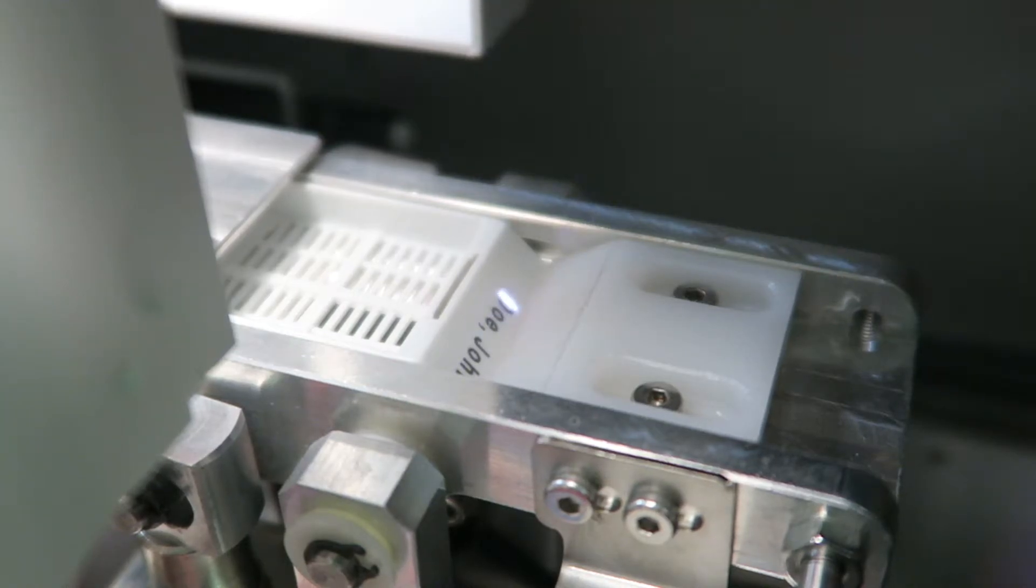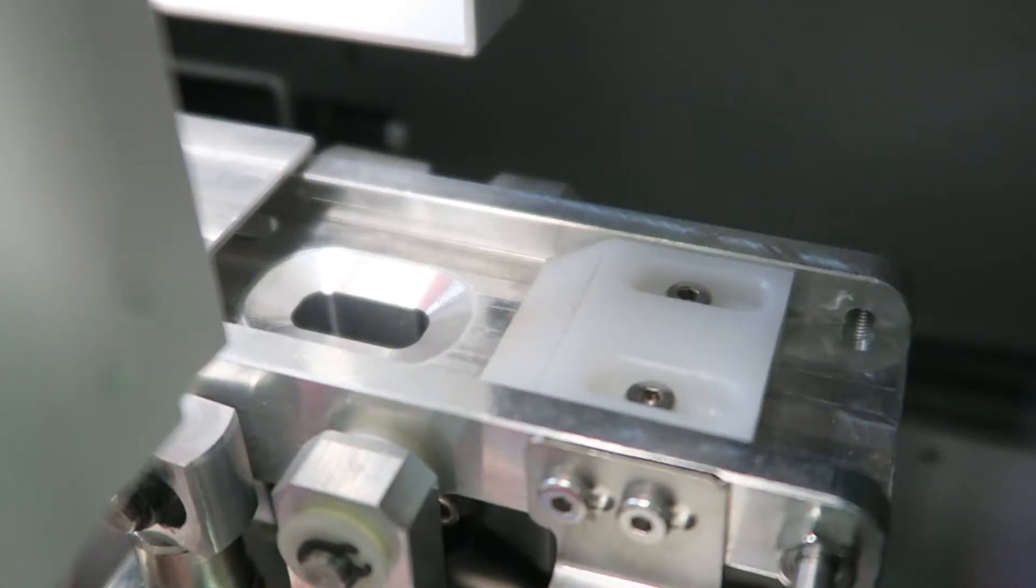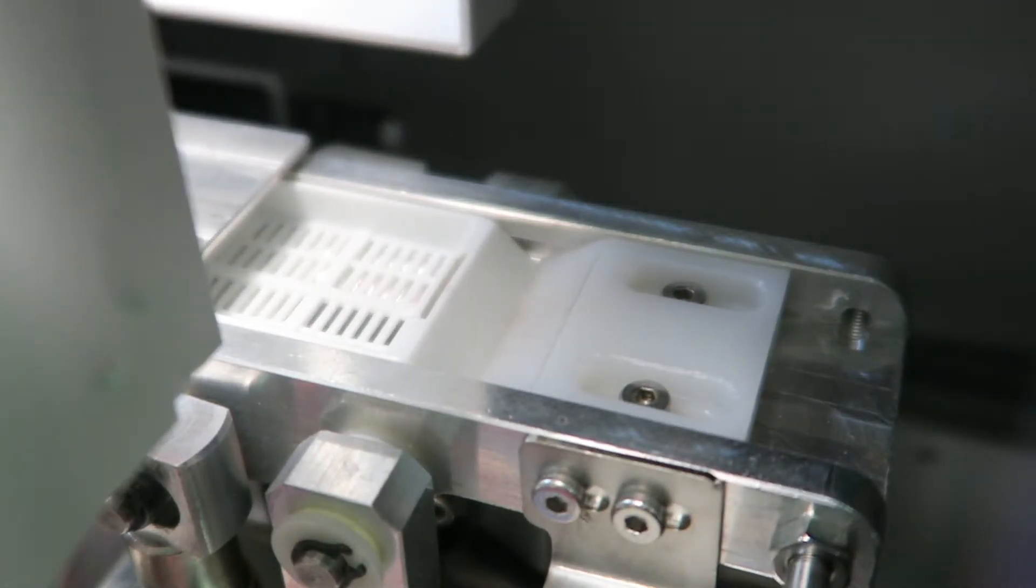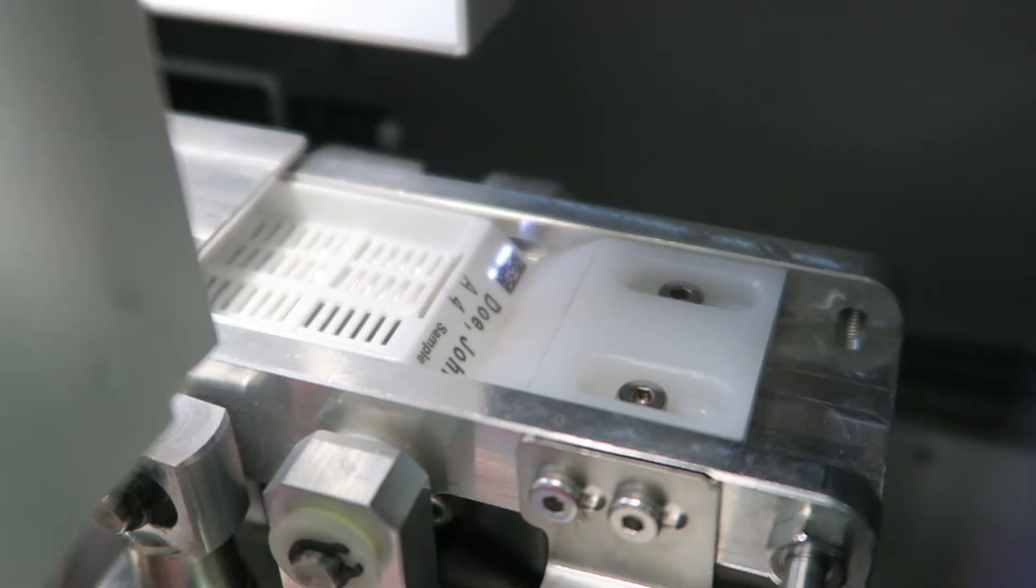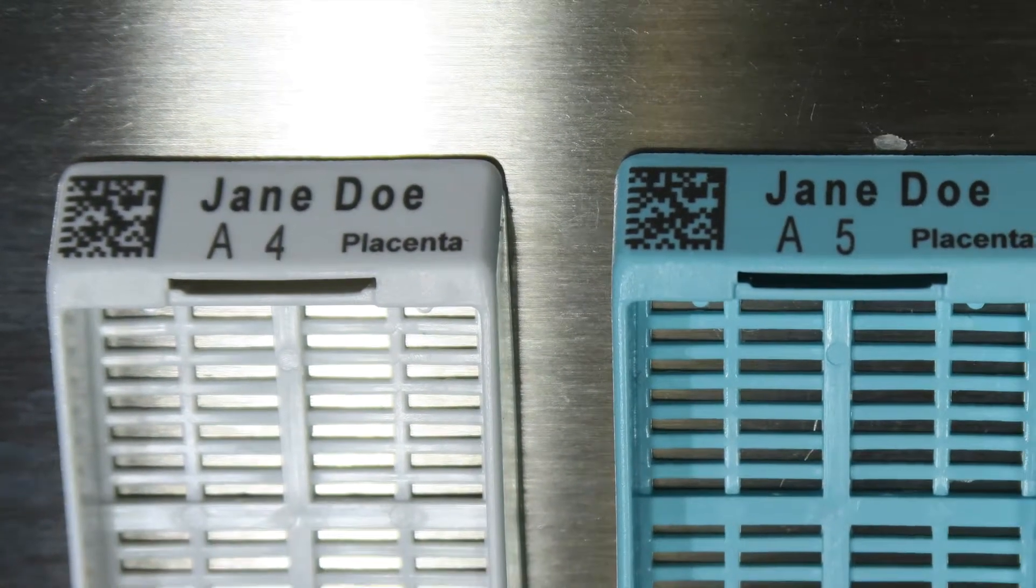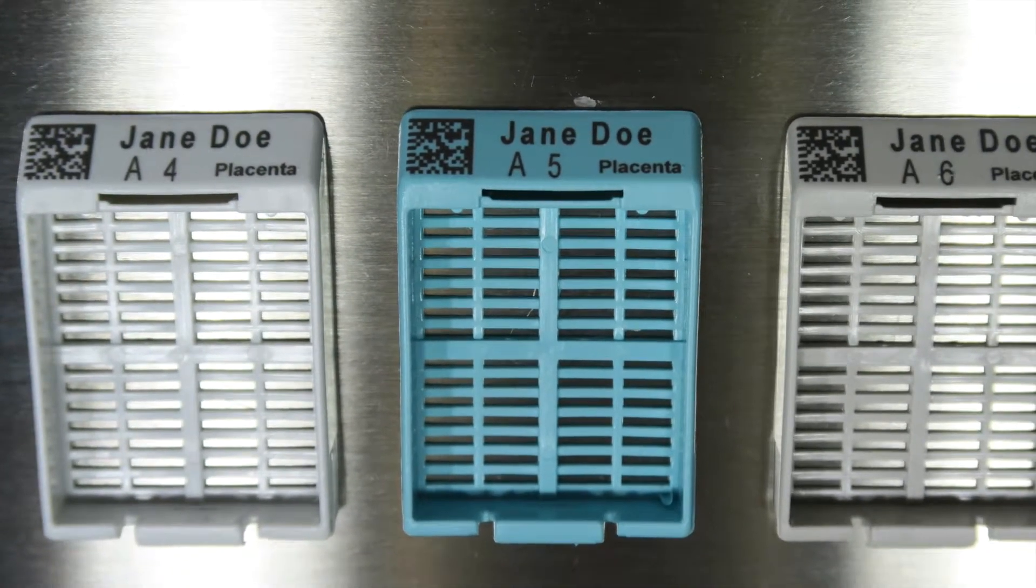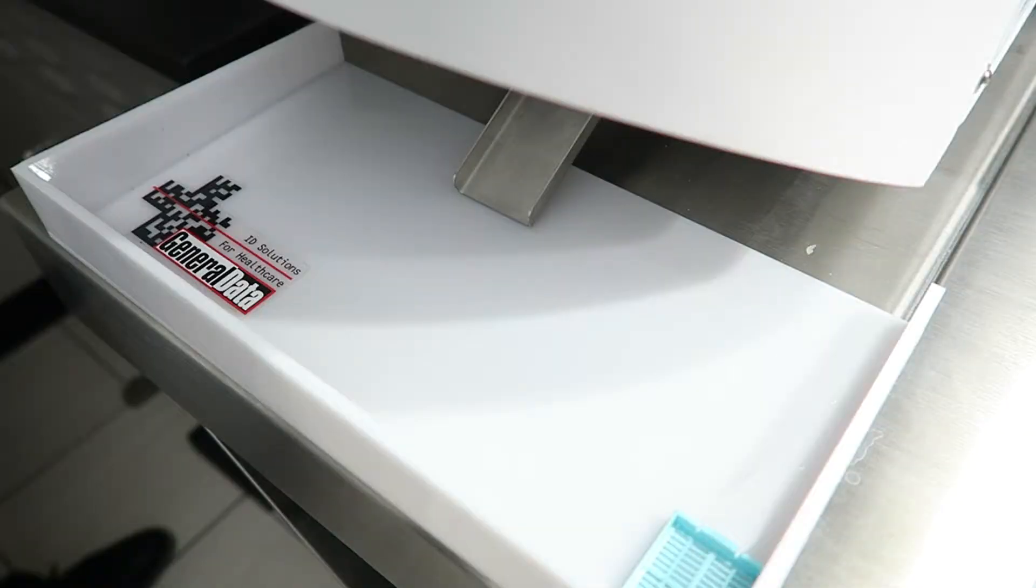The LaserTrack PH6 prints tissue cassettes using our innovative laser technology that creates the precise clean edges needed for scanning and decoding the small 2D barcodes used on tissue cassettes. Cassettes printed using the LaserTrack PH6 are reported to have a 99.5% scan rate throughout the tracking process.